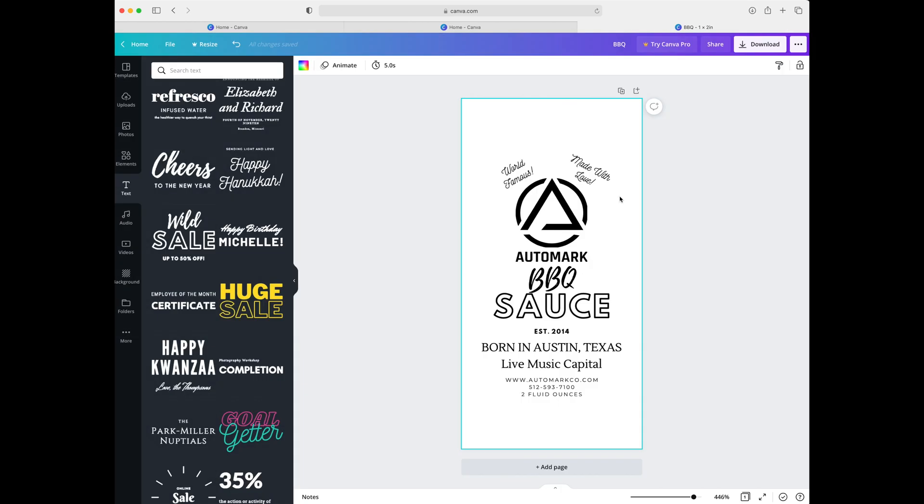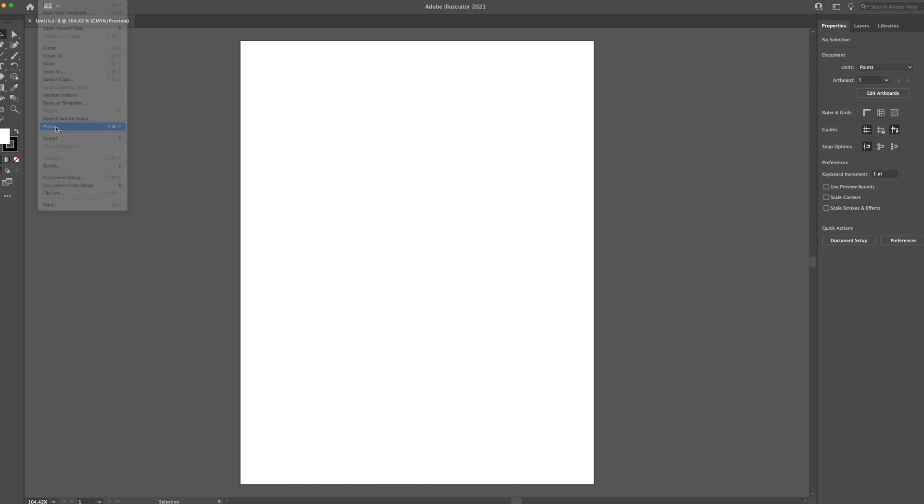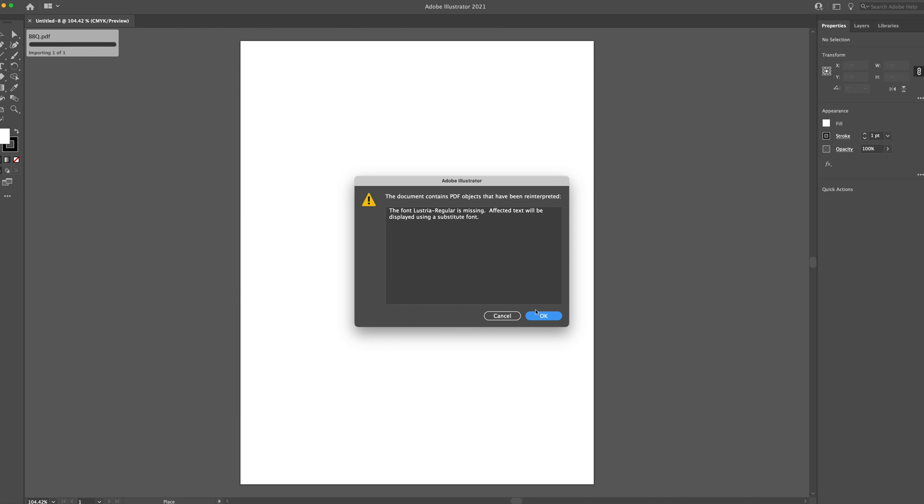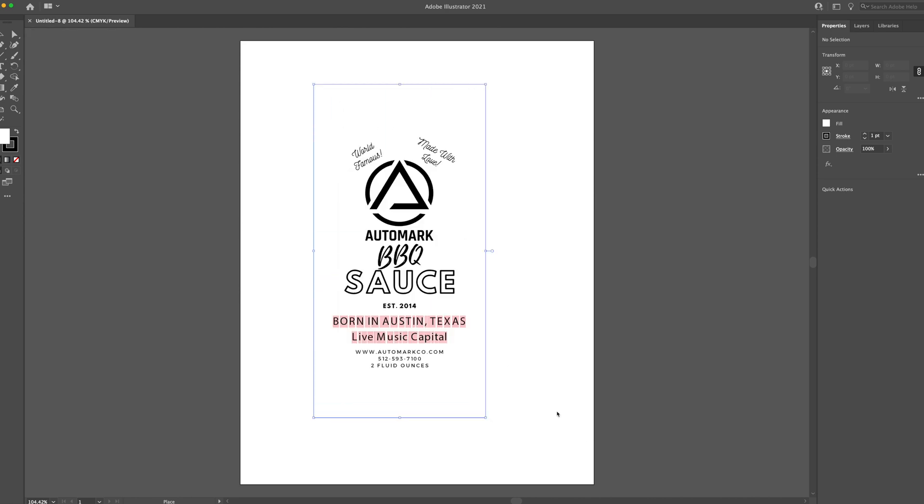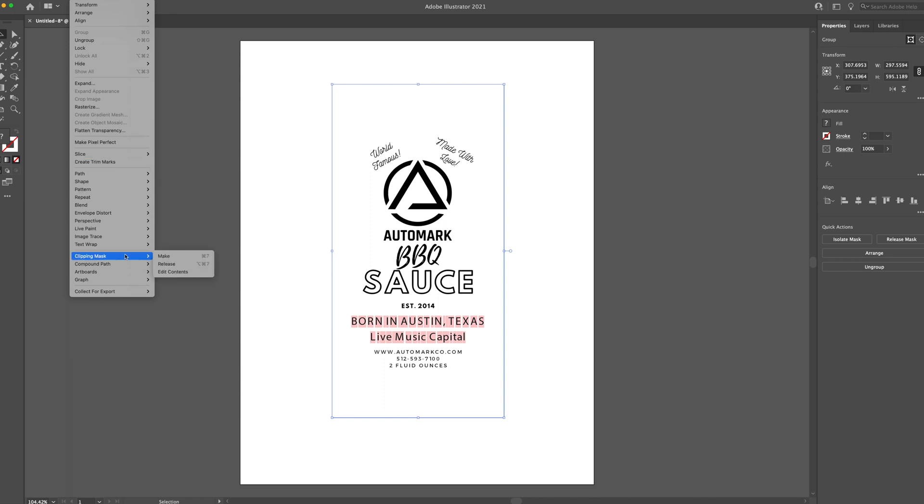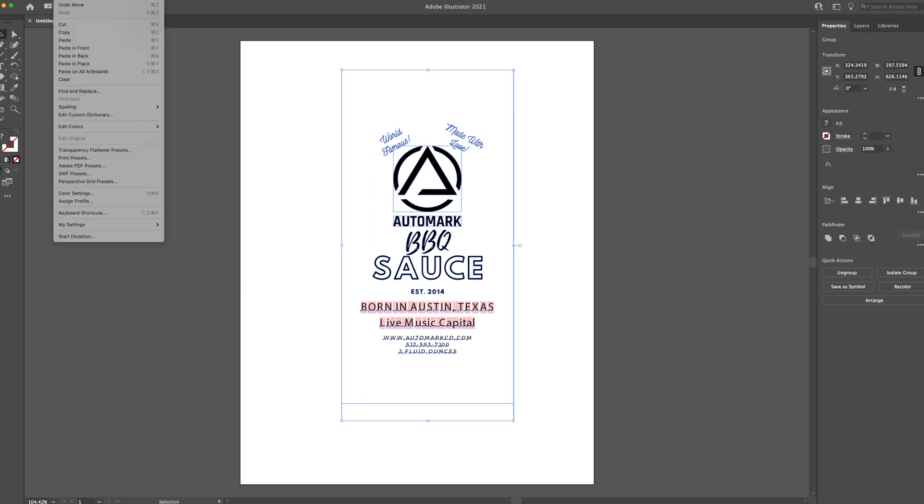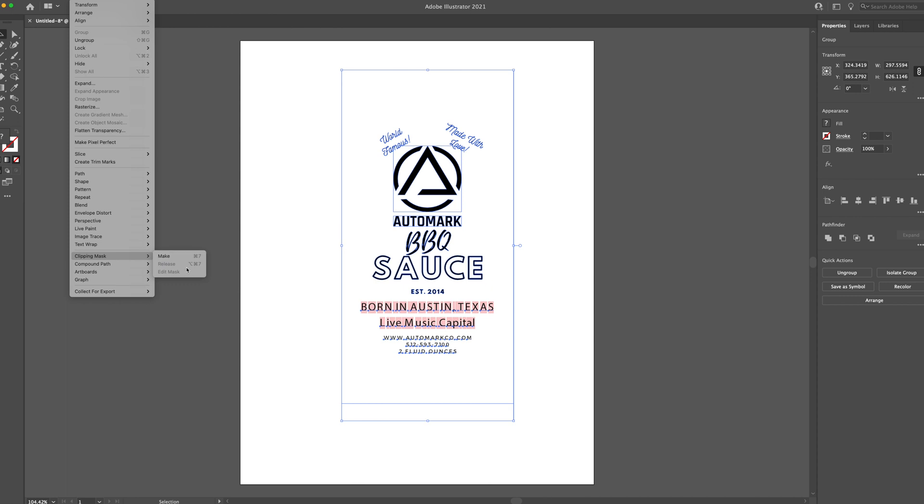Now we go to Adobe Illustrator. We go to file, place. Ignore the font request by clicking close. If you don't have this program, you can also use Corel. Under object, go down to select clipping mask and then click release. Continue to do this until you can no longer see this option. The image is now ready to be modified for the laser.